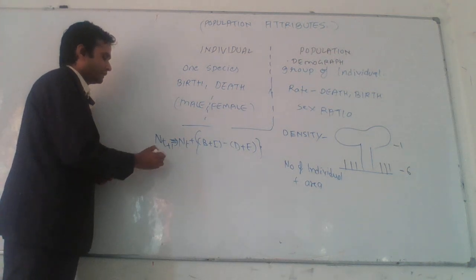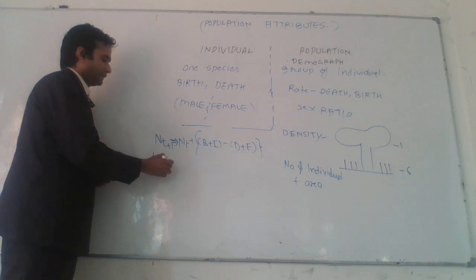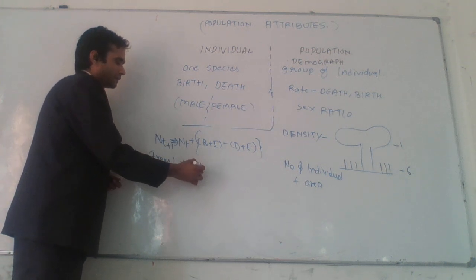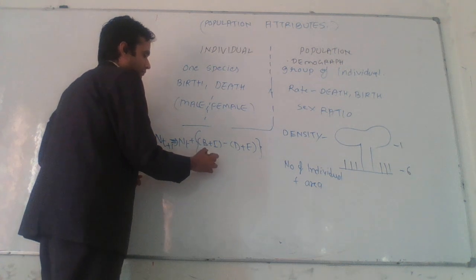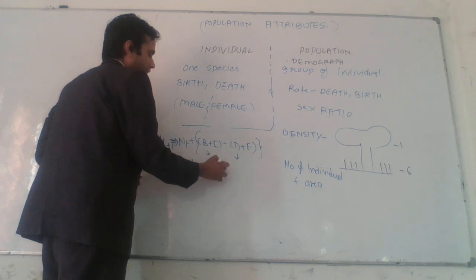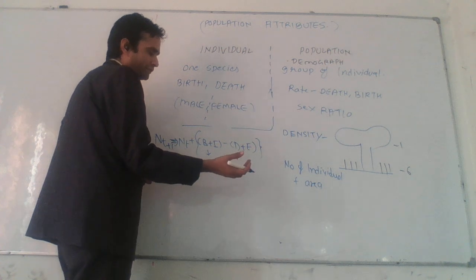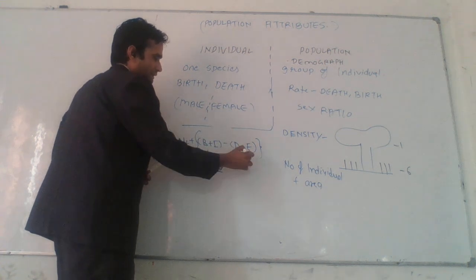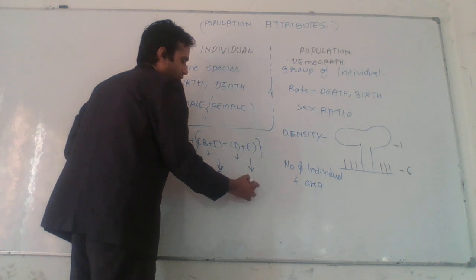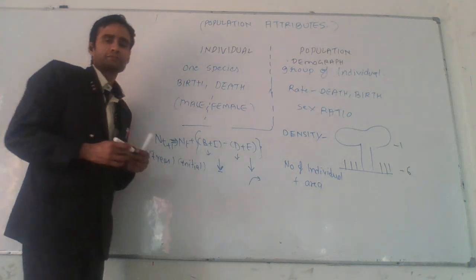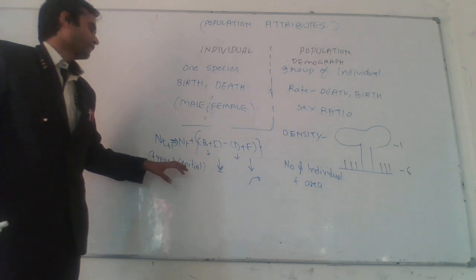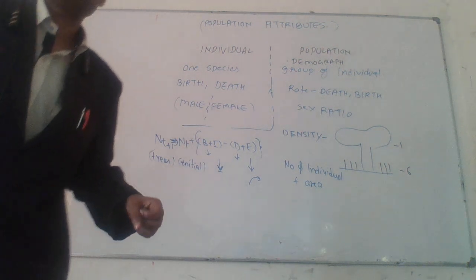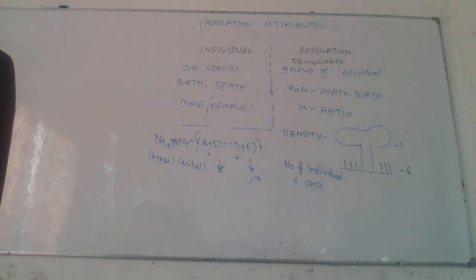Population after a given time is equal to the initial population, where B is birth, D is death, and E represents individuals coming from other areas of the same species. Immigrant means individuals going outside. That is the relation between the population and individual.